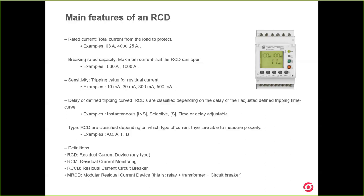Let's follow with the next concept: sensitivity. This is the tripping value for the residual current device. Probably you already know the most typical example, which is 30 milliamps. These 30 milliamps are very important because this value is the maximum current allowed to pass through the human body without any kind of damage. So this value is for protecting people — very important.